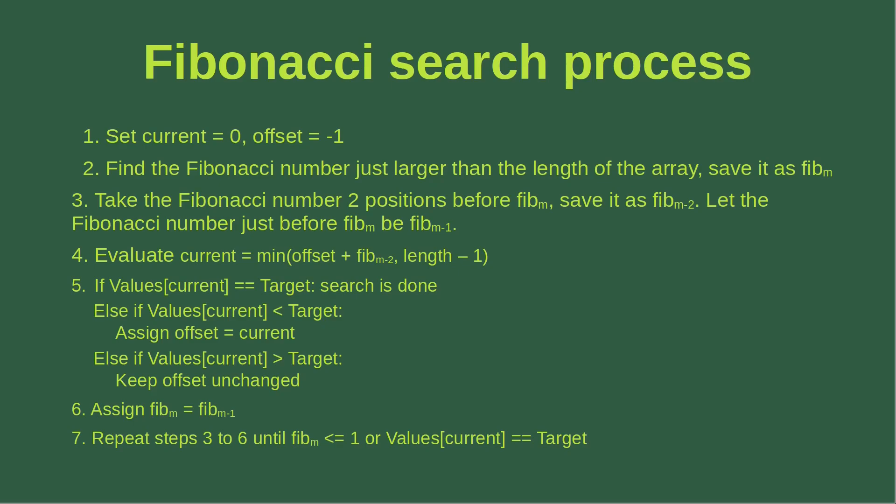In the third step, I want to take the Fibonacci number which is two positions before Fibonacci M, and I call it Fibonacci M minus 2. I also let the Fibonacci number just before Fibonacci M be called Fibonacci M minus 1. Then I want to evaluate the current index, which is based on a particular formula. I take the offset and add it by Fibonacci M minus 2, then compare the sum with the length minus 1, and take the minimum of the two values, calling it the current index.